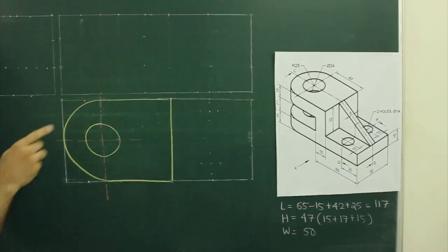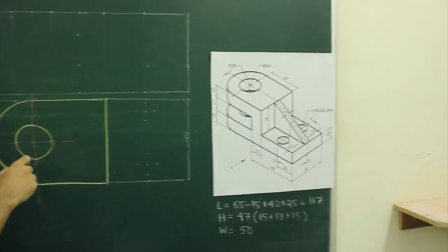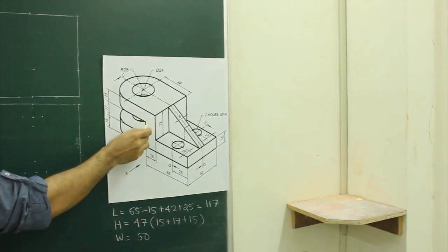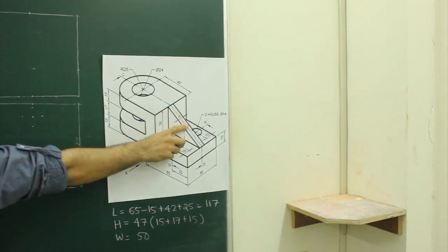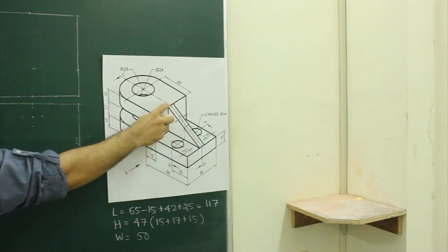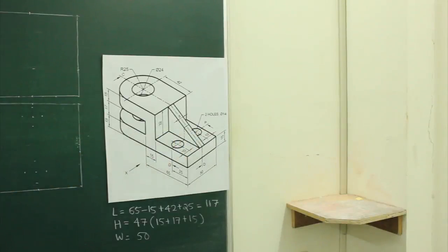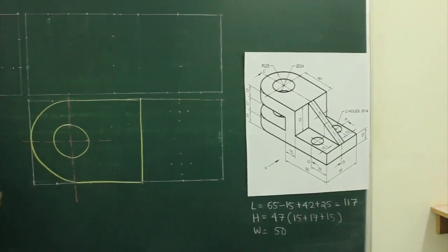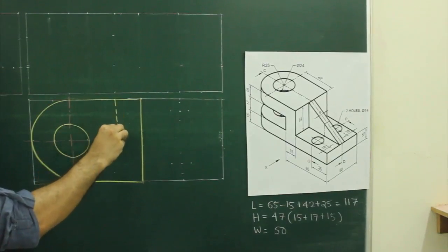Now, if you see the main diagram from the top, this edge you won't be able to see — the edge is going through and through, so that would be dotted. You can see this slope — that will be a rectangle — and these two circles. So first we will take 15 from here and we will draw a dotted line.